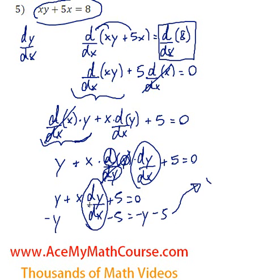So I still have x times dy/dx over on the left hand side of the equation. Now I just have negative y minus 5 over here, and I can finally divide both sides by x. And we're done.